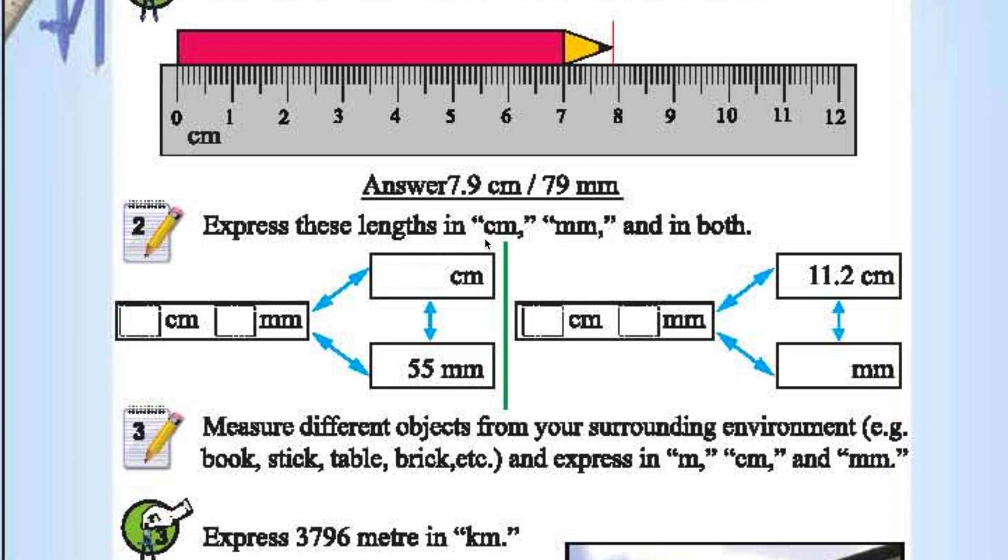Express these lengths in centimeters, millimeters, and in both. 55 millimeters is 5.5 centimeters or otherwise 5 centimeters 5 millimeters. 11.2 centimeters is 112 millimeters, or 11 centimeters 2 millimeters.